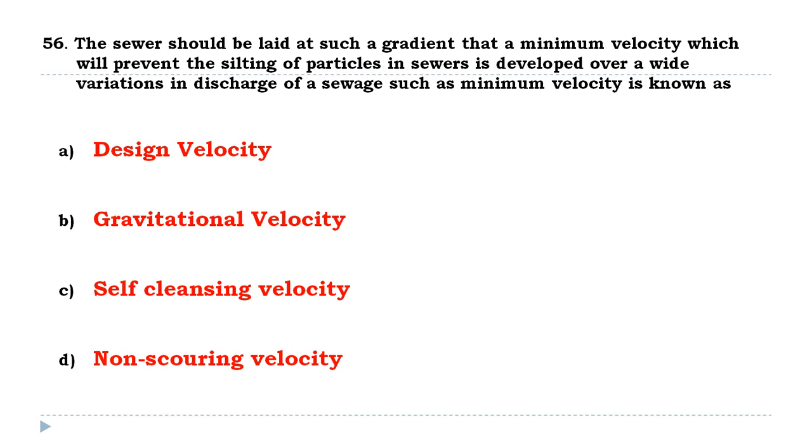The sewer should be laid at such a gradient that a minimum velocity which will prevent the silting of particles in sewers is developed over a wide variation in discharge. Such minimum velocity is known as the self-cleansing velocity.